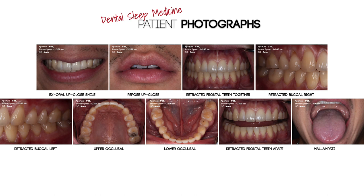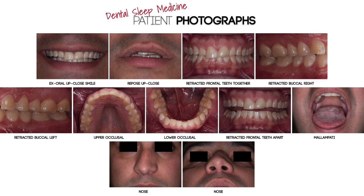Besides the basic 12 and the full series of photographs, I also have patients I treat for specific things. For example, I have dental sleep medicine patients that I treat with oral appliances. This series typically includes a minimum of 9 photos. One of the photos is a photo of the airway, having the patient stick their tongue out and documenting their Mallampati score. I will sometimes augment this photo series with images of a patient's nose if they have what appears to be a deviated nasal airway.